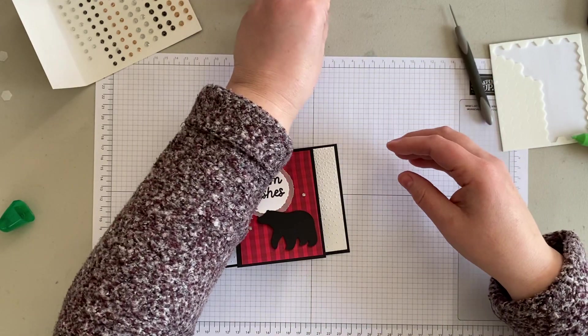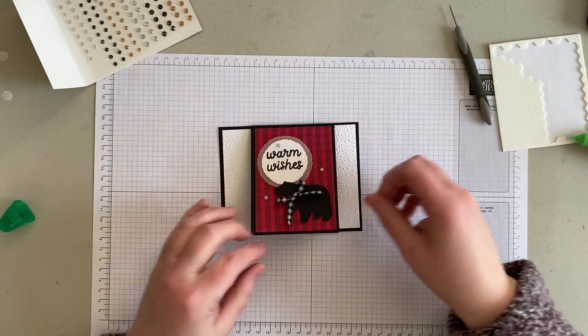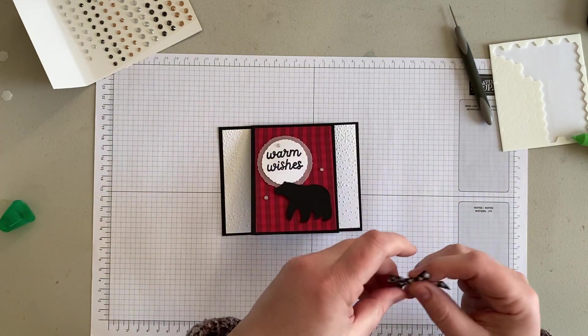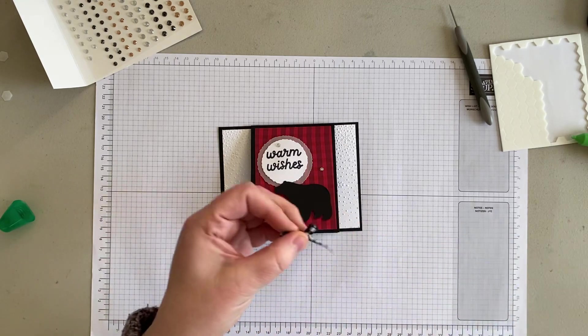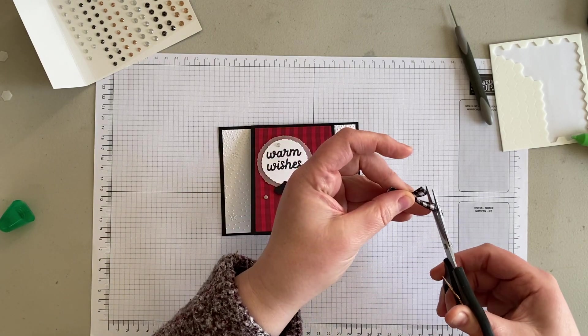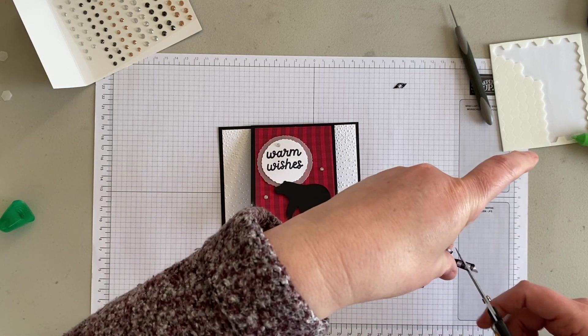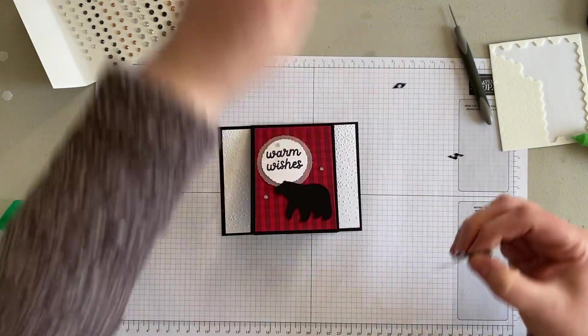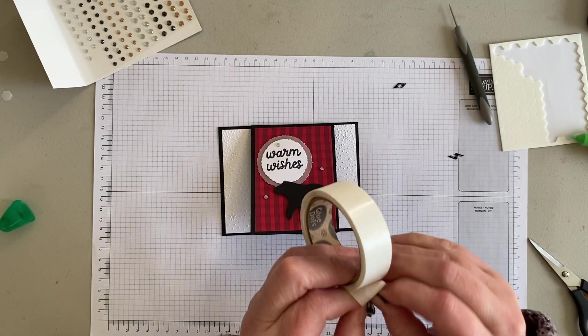And then I have a bow here that I'm going to stick on my bear. I might just make it a little smaller. Trim that. Okay, so I'm just going to add that with the glue dot. Easy peasy.